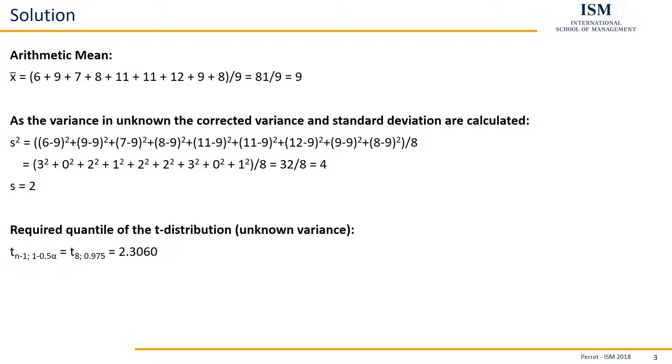If we look up this value, 8 degrees of freedom, 0.975 in the table, we find there a value of 2.306. Thereby, we have all three values we need for the confidence interval.